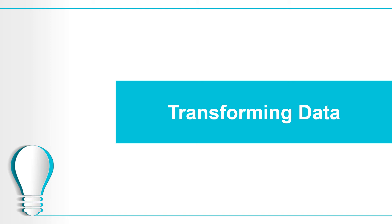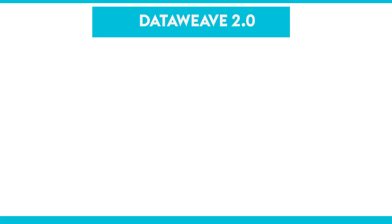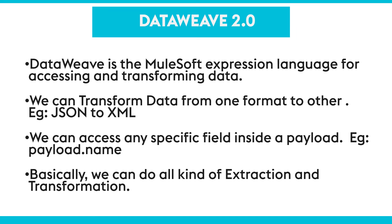Welcome back to the new lecture. In this lecture, we are going to discuss about transforming data. DataWeave 2.0 is a MuleSoft expression language for accessing and transforming data. Why not Java? MuleSoft claims that DataWeave is faster than Java and has added advantages. We can transform data from any format to any other format — for example, JSON to XML, XML to CSV, JSON to CSV, and so on.